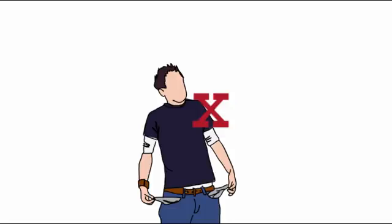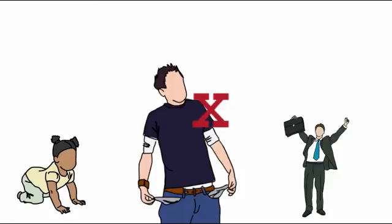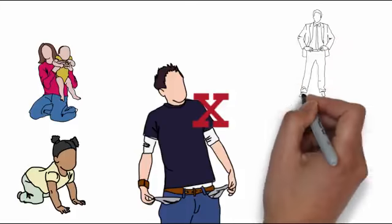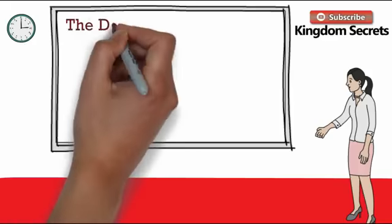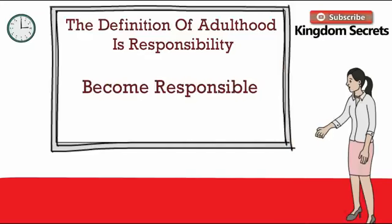None of you was born to be poor. You may have been born poor, but you were not born to be poor. You may have been brought up poor, but you were not brought up to be poor. Understand this: the definition of adulthood is responsibility. When you become an adult, you take responsibility for your future. Become responsible.